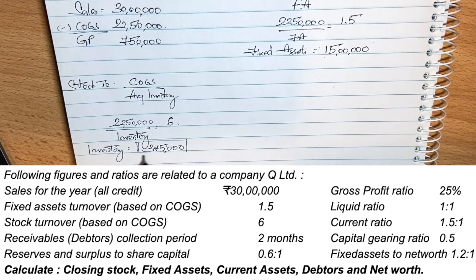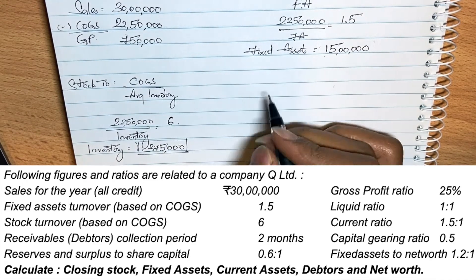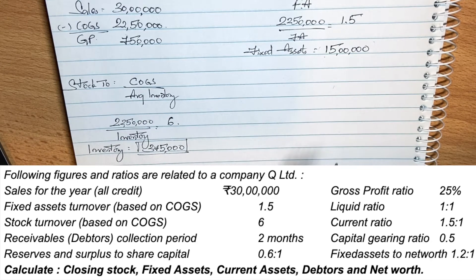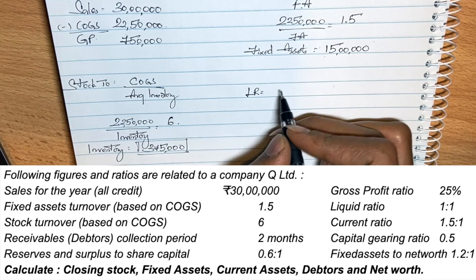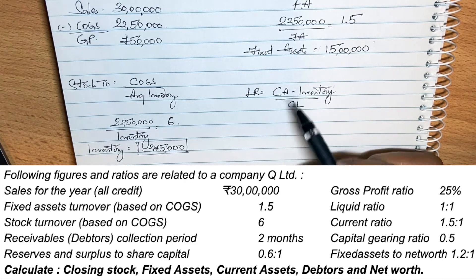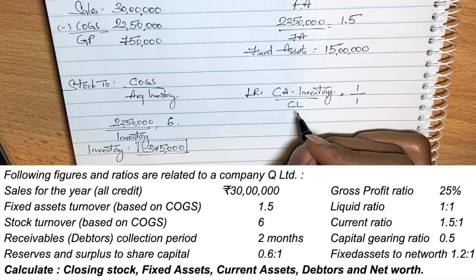This gives us inventory. Now, both the liquid ratio and current ratio are equal to 1.5 to 1 and 1 to 1 respectively. The liquid ratio formula is liquid assets divided by current liabilities, where liquid assets equals current assets minus inventory and any prepaid expenses. Let current liabilities equal x.